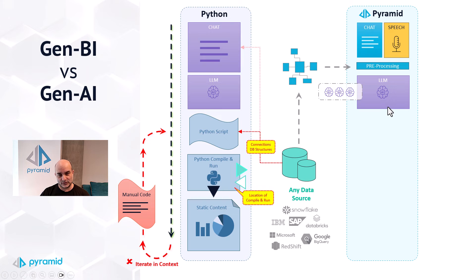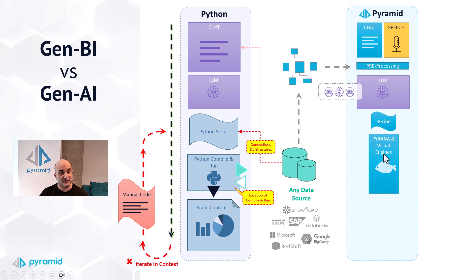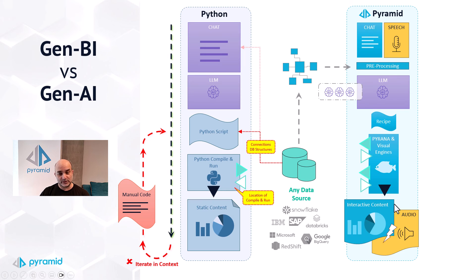In Pyramid it gets interesting: you can interchange LLMs based on the different data sets you're using, so you get the right model for the right question. It then generates a recipe — a very narrow recipe, much smaller than the matching Python script — which is then handed off to Pyramid's existing engine known as Piranha. Piranha includes the querying capabilities, formula capabilities, all the logic, the analysis, and the visualization. It queries the database, and you can do this in multiple stages and steps with follow-up.